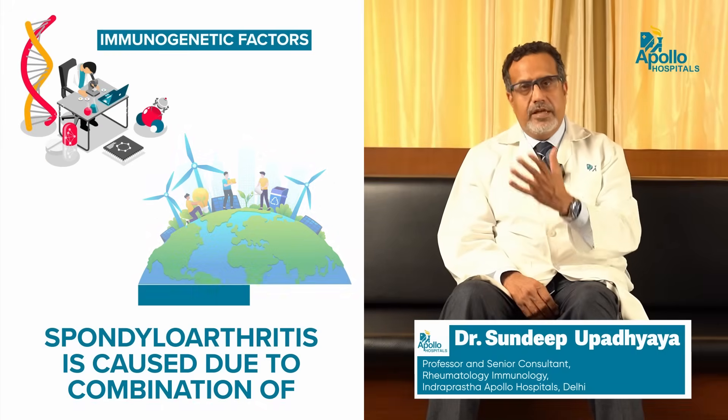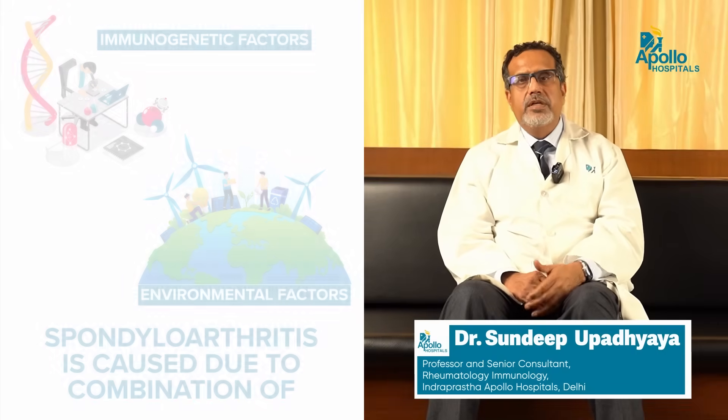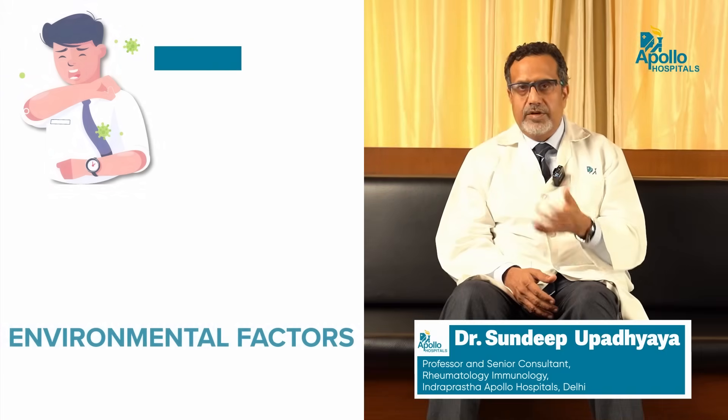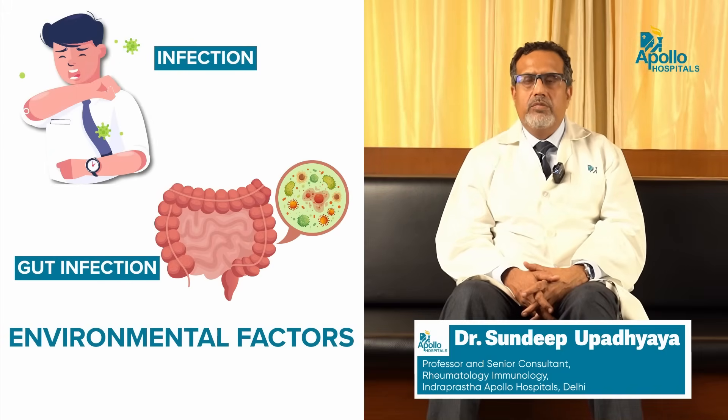AS or spondyloarthritis is caused by a combination of immunogenetic and environmental factors. The HLA-B27 gene is associated with the immunogenetics of this disease. The young male individual who has inherited certain genes from both parents is the one major factor that propels the disease. Environmental factors, possibly related to infection — gut infections such as shigella, salmonella, and some forms of dysentery — can cause a spondylitis arthritis called reactive arthritis.